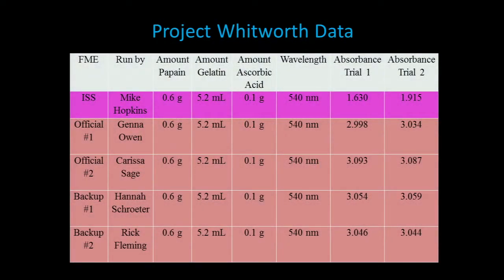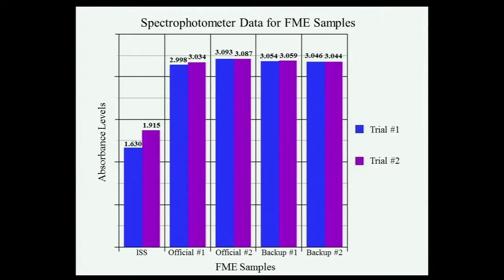This is our data that we collected. On this bar graph, the four samples on the right are the ones conducted on the ground, and the one on the left is what we had in space. We were very happy with the results. It was astounding — we found 40% more efficient breakdown of proteins in space than on Earth. This was completely unprecedented for us.